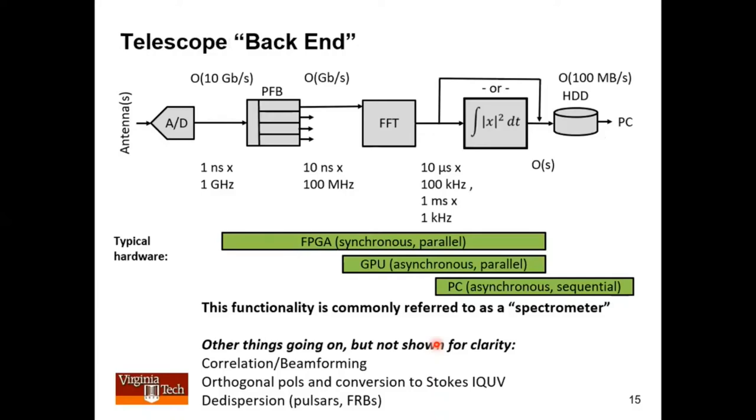Of course, that detector I showed in an earlier slide is not just a square law detector or something like that, although I guess in some sense it ultimately is, but this is an example of what a telescope back end would look like.